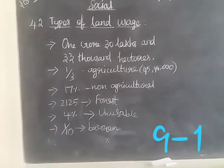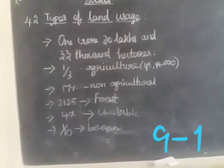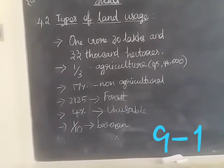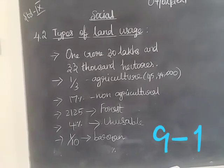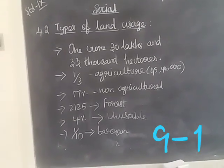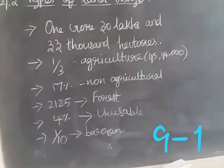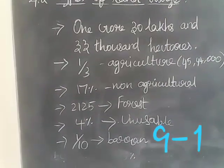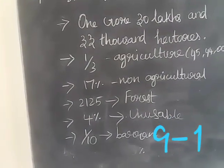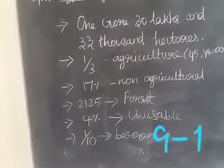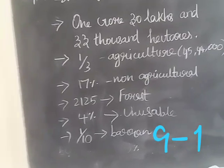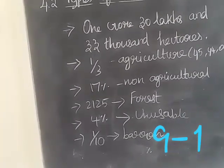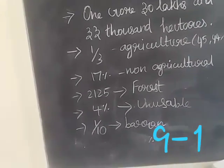One third of the total land is used for agriculture, that is 45,44,000 hectares. About 17 percentage of land is used for non-agricultural purposes.